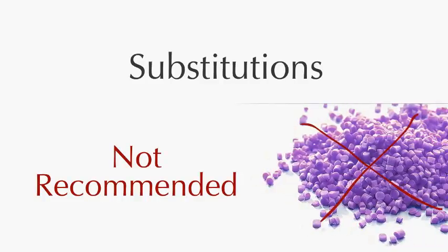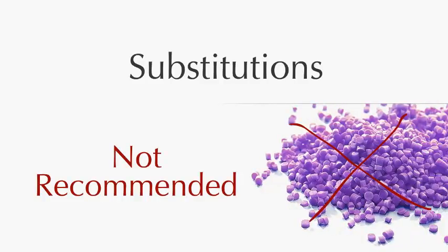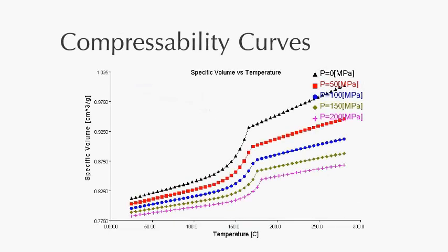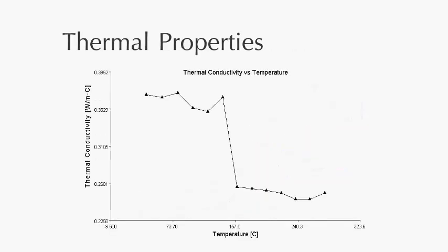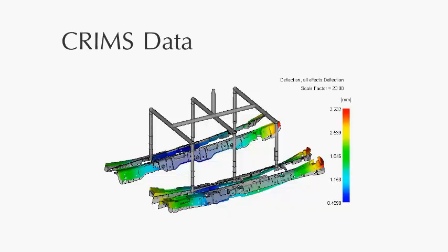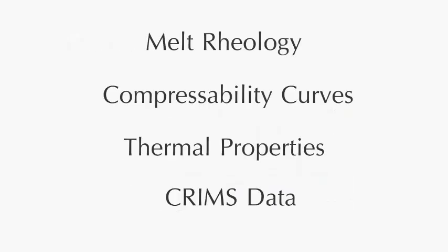Substitutions are not recommended for the overwhelming majority of cases. Some of these properties include melt rheology, which describes the plastic's viscosity as a function of temperature and shearing; compressibility curves, which describe the plastic shrinking under packing pressure while it cools down; thermal properties, such as specific heat and thermal conductivity over a range of temperatures; and a special set of shrinkage data called PVMS, which helps describe a material's shrinkage in different directions. We'll deal with each of these individually in a separate tech tip.